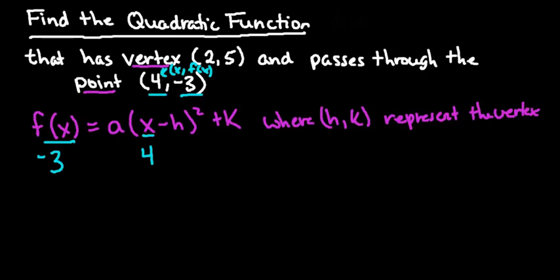The other thing that we already know is we know h and k. 2 is going to be the h, and 5 is going to be the k. So if I replace my h with 2 and my k with 5, and the rest just stays the same. I have to have the squared, and I have to have the a term.